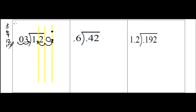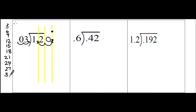We're counting by 3s — listing multiples from 3 up through 24 and continuing until we finish the multiplication table. We can't have 10 or more than one digit in each column. So 3 goes into 1 zero times.